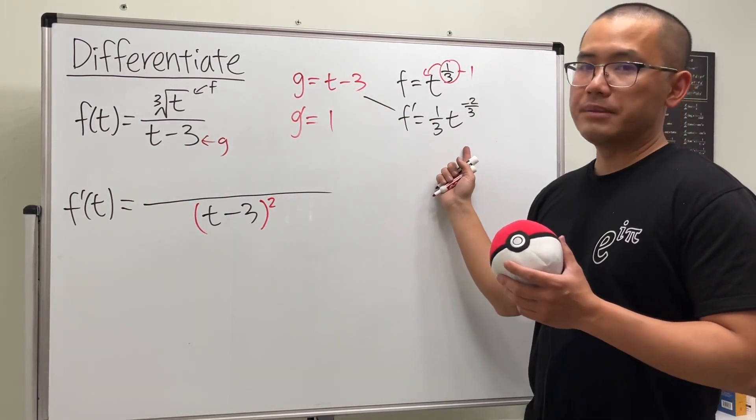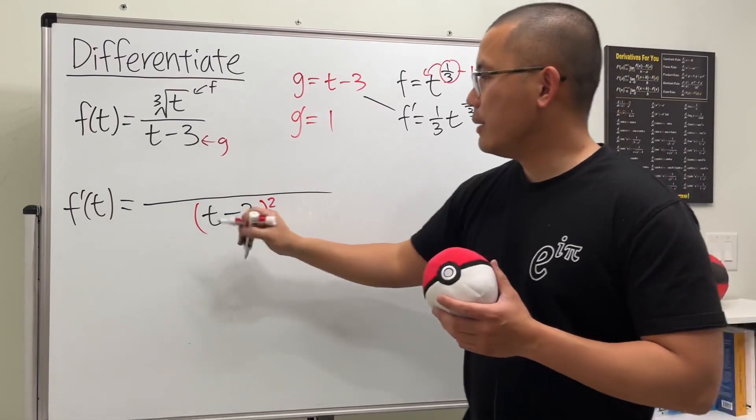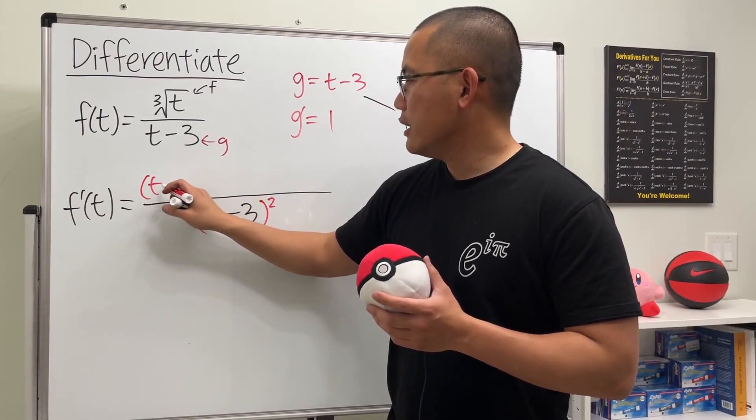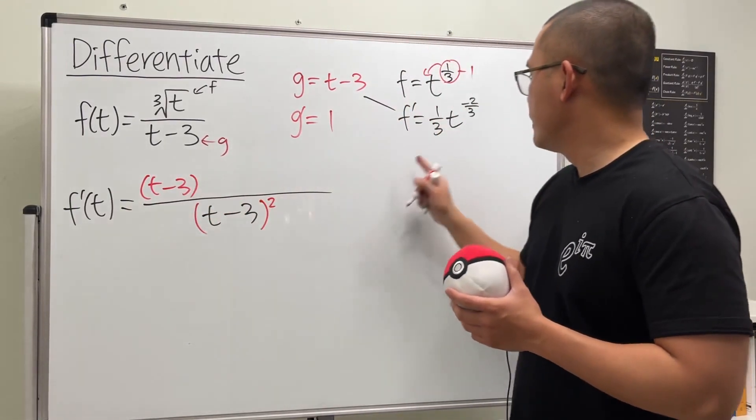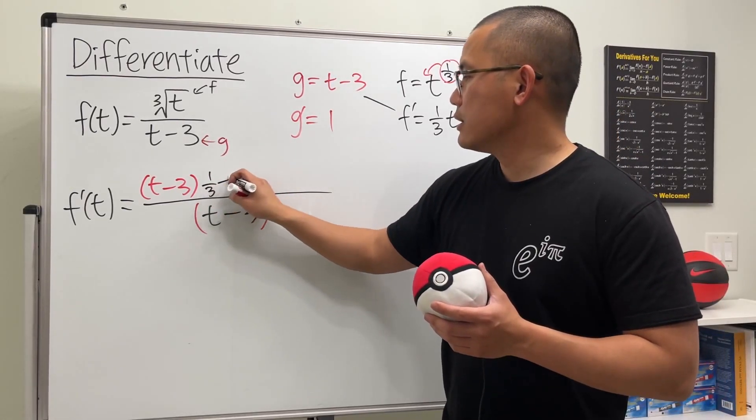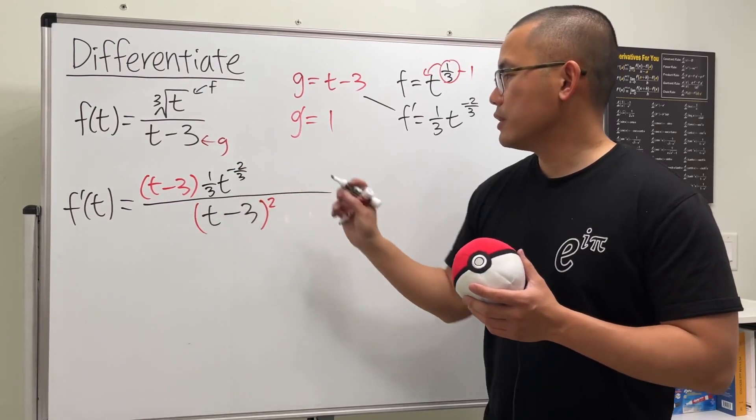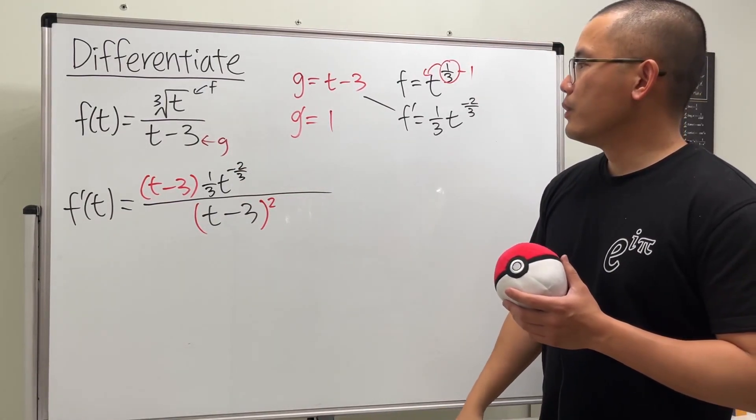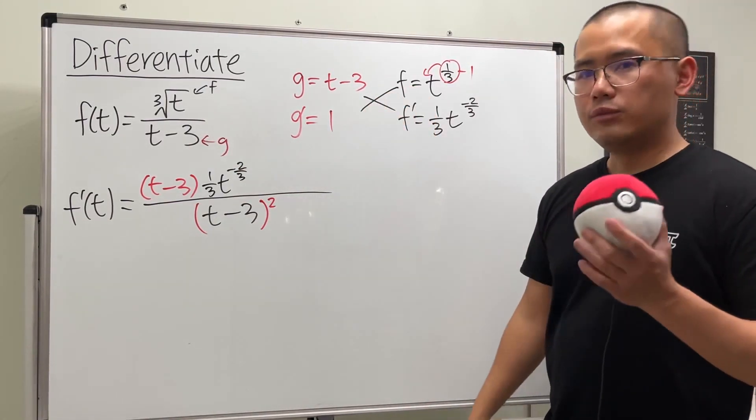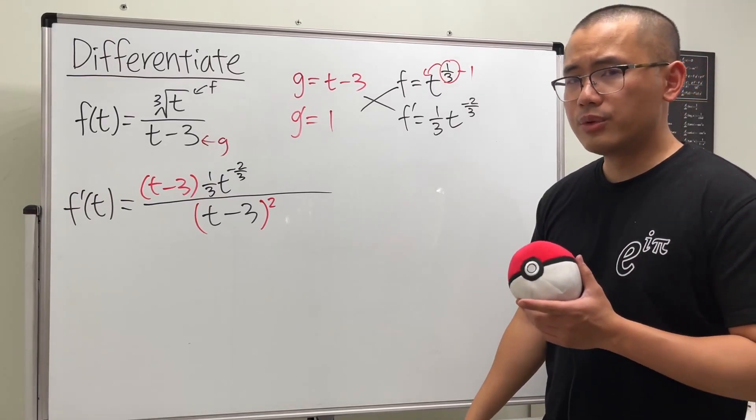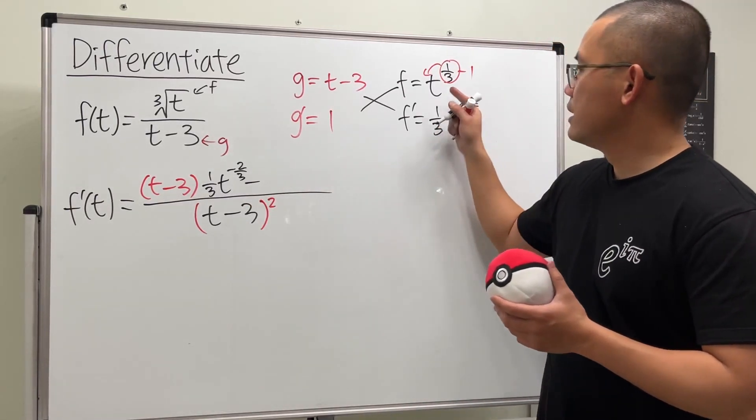And for the numerator, we do this times that first. So write down our parentheses t minus 3, and then we have that which is one-third t to the negative two-thirds. And then we do this times that, and remember for the quotient rule we are going to subtract. So we subtract, here we have t to the one-third, and we are going to multiply this by 1.